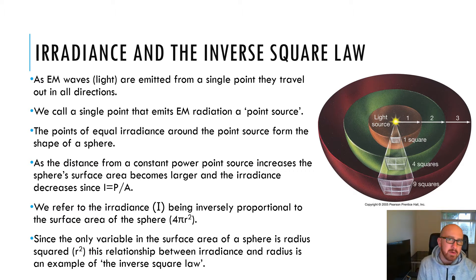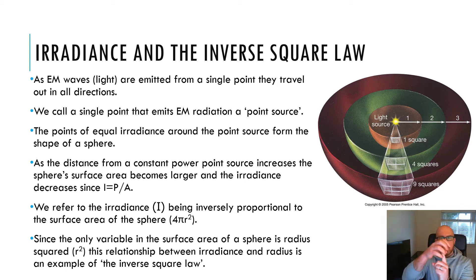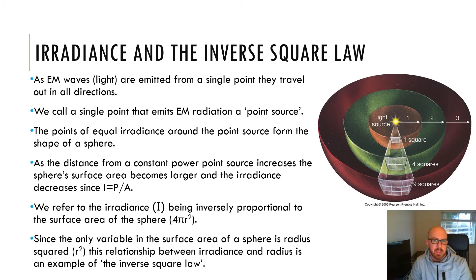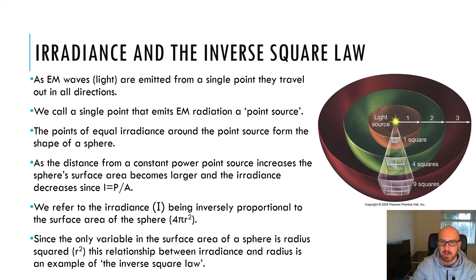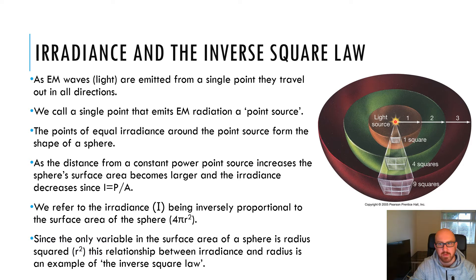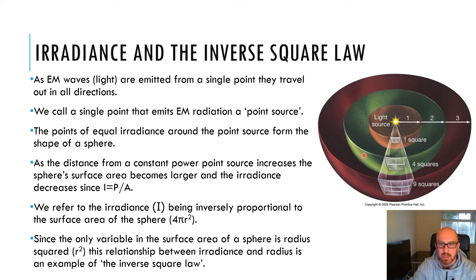So how does this link into what's known as the inverse square law? You've already done a little bit of the inverse square law when we covered gravitation, but we're going to officially talk about it now in terms of light. As EM waves and light are emitted from a single point, they travel out in all directions — we think of a single point such as a light source with light coming out in all directions in a giant sphere shape. We call a single point that emits EM radiation a point source. The points of equal irradiance around the point source form the shape of a sphere. As this sphere gets bigger, the irradiance gets smaller because the power is spread over increasingly larger spheres.